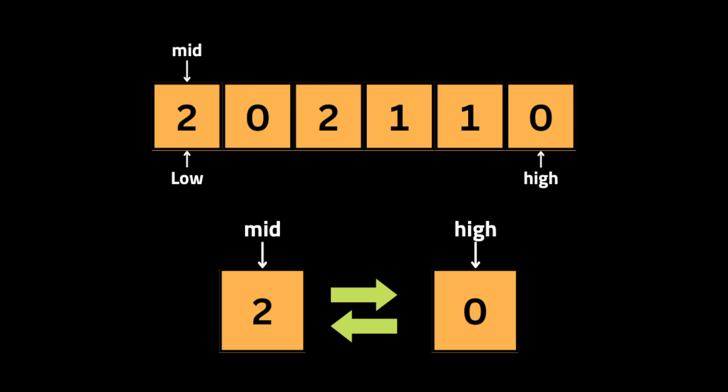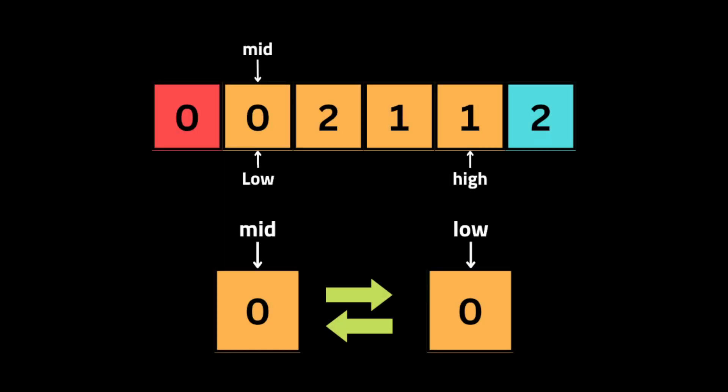We start looping through the array. If the middle pointer is pointing at integer two, we swap it with the value where the high pointer is pointing. That's how we ensure that each time we find the value two, we move it to the end. Then we move the high pointer to the previous position. The next situation is when middle and low point to integer zero — we don't need to swap since the integer is already in the correct position, so we move both middle and low pointers by one.